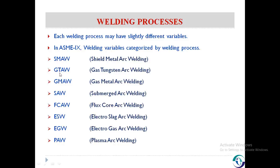The first one is SMAW — Shielded Metal Arc Welding. GTAW is the Gas Tungsten Arc Welding, and GMAW is the Gas Metal Arc Welding. SAW is the Submerged Arc Welding, FCAW is the Flux Core Arc Welding, ESW is the Electroslag Welding, EGW is the Electrogas Welding, and PAW is the Plasma Arc Welding. Today we will discuss about two welding processes: SMAW and GTAW, and their relevant welding variables.